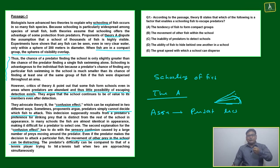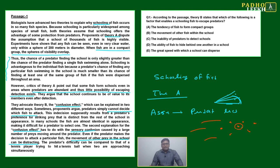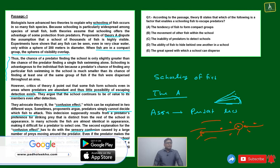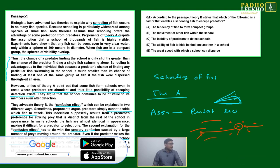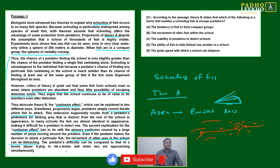This gives one kind of safety guard. Suppose five fish are there, all moving — the predator decided to attack one, but by the time they act, that fish has moved and another fish has come. Then the predator gets confused: should I attack here or there? This gives one kind of protection. The predator's difficulty can be compared to that of a tennis player trying to hit a tennis ball when two are approaching simultaneously.